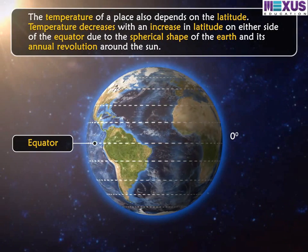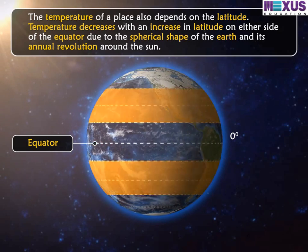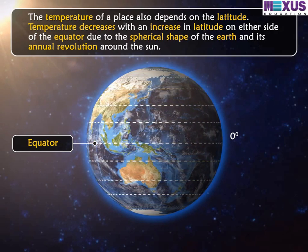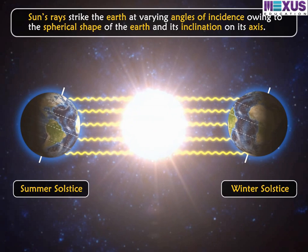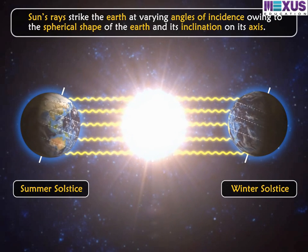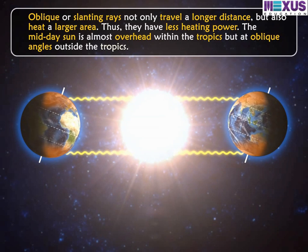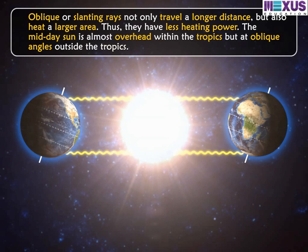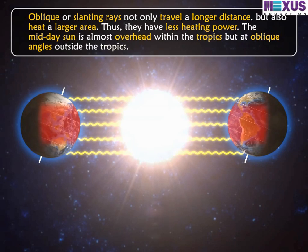The temperature of a place also depends on latitude. Temperature decreases with an increase in latitude on either side of the equator, due to the spherical shape of the Earth and its annual revolution around the Sun. The sun's rays strike the Earth at varying angles of incidence owing to the spherical shape and its inclination on its axis. Oblique or slanting rays not only travel a longer distance but also heat a larger area, so they have less heating power. The midday sun is almost overhead within the tropics but at oblique angles outside the tropics.